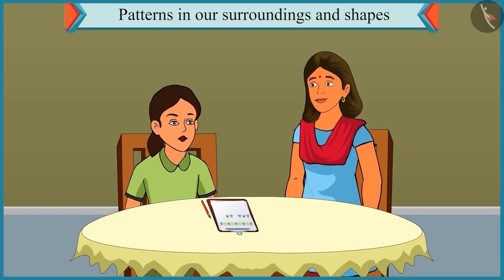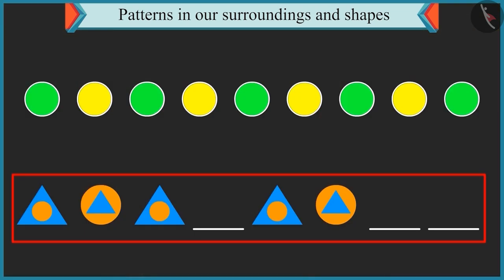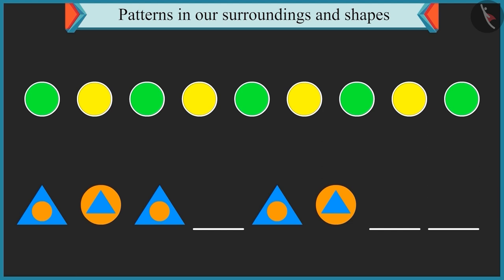Yes, this pattern is very easy. Come on. Now, look at the second pattern. This pattern is made of two shapes. Yes, you identified it right. There are triangles and circles in this pattern.